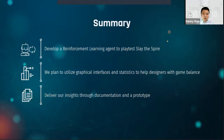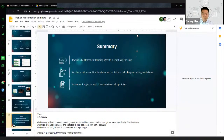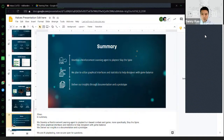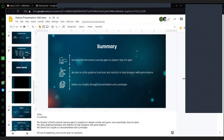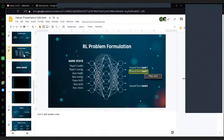Our plan after half consists of three points: optimizing the AI agent and adjusting architecture to achieve a higher win rate, making a technical report to record what we have done, and making our product more accessible to designers by having them playtest our prototype. In summary, we developed a reinforcement learning agent to playtest a turn-based combat card game — specifically Slay the Spire — and plan to utilize graphical interfaces and statistics to help designers with game balance. We are AI Playtesting and now open for questions.